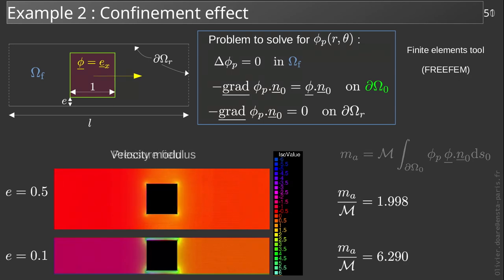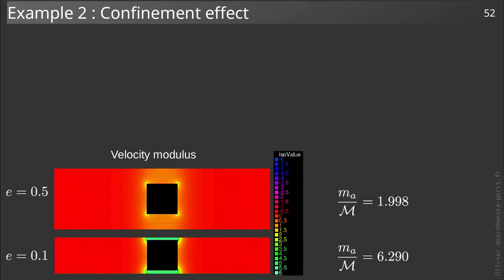We can also represent the modulus of the velocity according to this mode. For e equals 0.5, we find that the velocity is about equal to 1 in the upper and lower channel, that it tends to zero quite quickly when moving away from the square, and that it becomes larger in small areas around the corners. In the confined case, for e equals 0.1, we see that the velocity becomes very large in the constrictions. This important increase in the inertia of the fluid for the same acceleration of the solid is at the origin of the increase of the added mass coefficient.